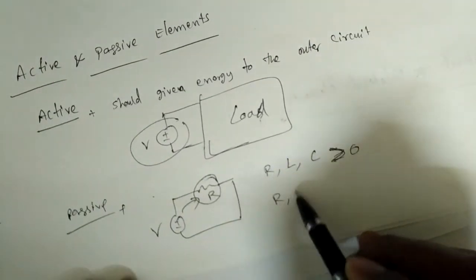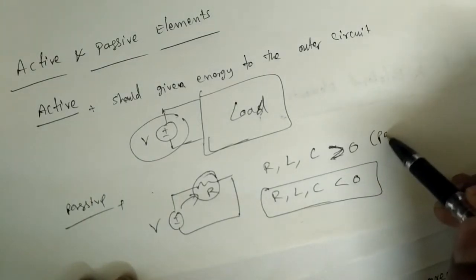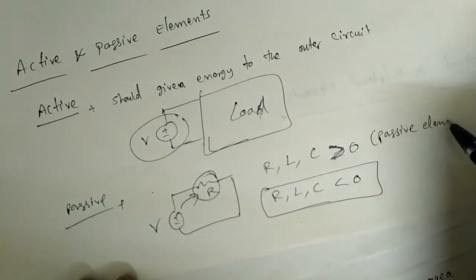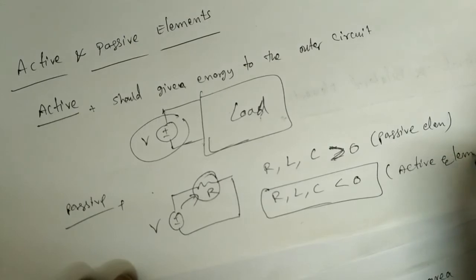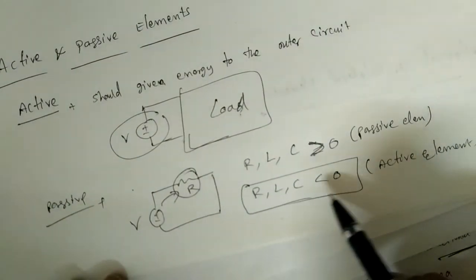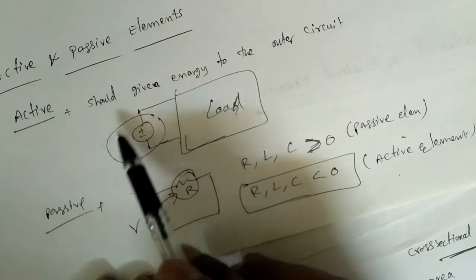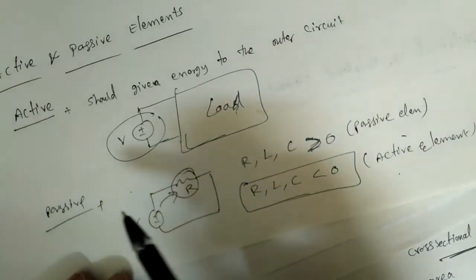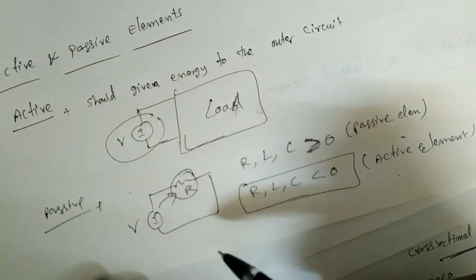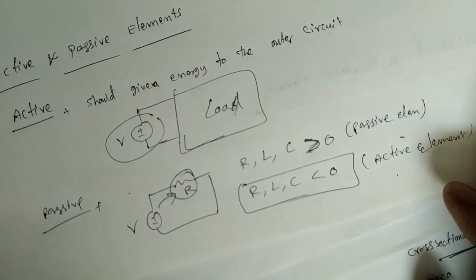When R, L, or C values are less than zero they behave like active elements, but those are rare cases. So: active means the element gives energy to the outer world, and passive means it always consumes or dissipates power.